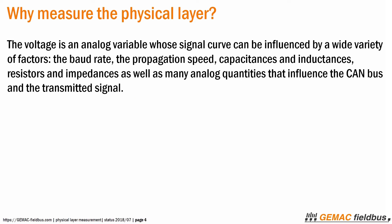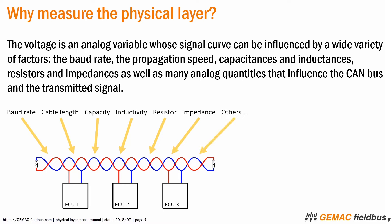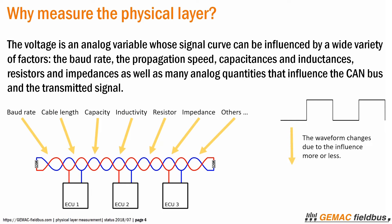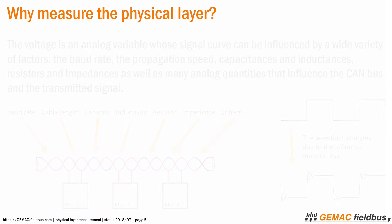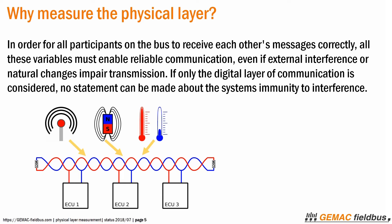The voltage is an analog variable whose signal curve can be influenced by a wide variety of factors: the baud rate, the propagation speed, capacitances and inductances, resistors and impedances, as well as many analog quantities that influence the CAN bus and the transmitted signal. In order for all participants on the bus to receive each other's messages correctly, all these variables must enable reliable communication, even if external interference or natural changes impair transmission.